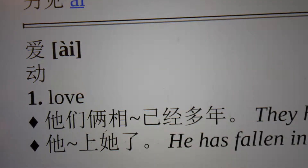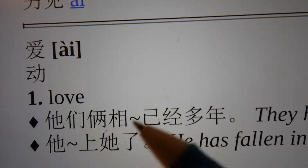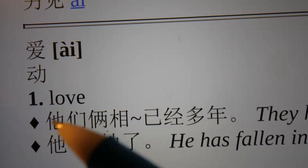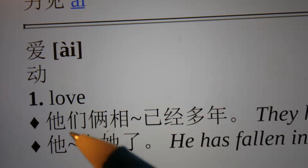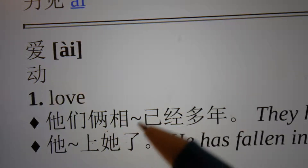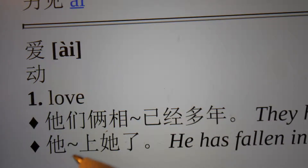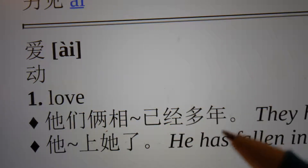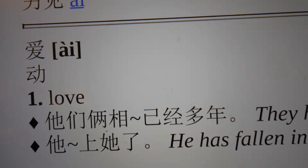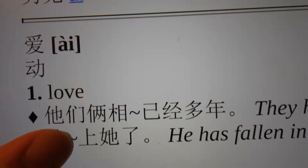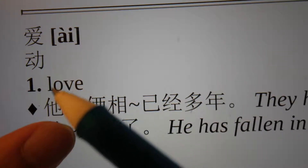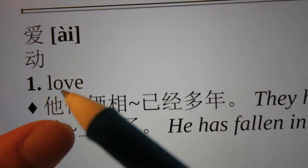爱, and 爱 means love in Chinese. For example, 他们两相爱已经多年 — in English, 'they have been in love for many years.' And 他爱上她了 can be 'he has fallen in love with her.' This is the first meaning of 爱, which is love.